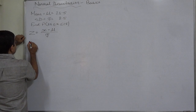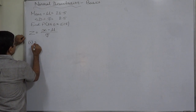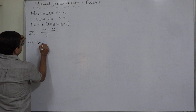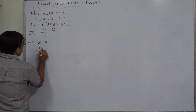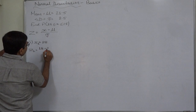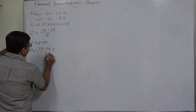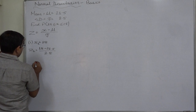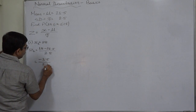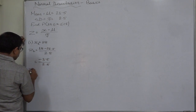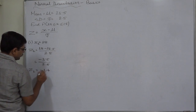Here x has two possible limits. First, take x = 18. So z = (18 − 21.5) / 2.5 = −3.5 / 2.5. The first value of z is −1.4.